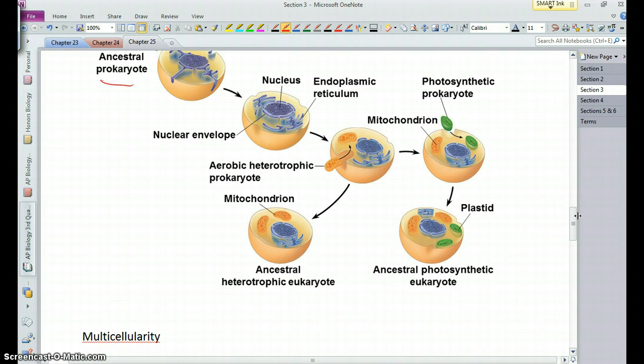Now it's assumed that in this series of events the acquisition of the mitochondrion came first. And you can think about why that is. And in class we'll discuss about why we're pretty sure that's the way in which it happened.